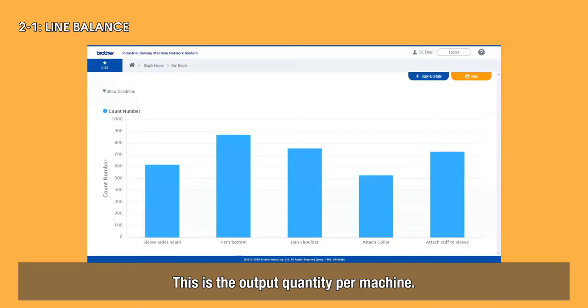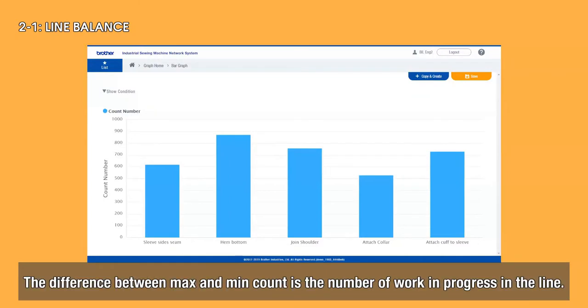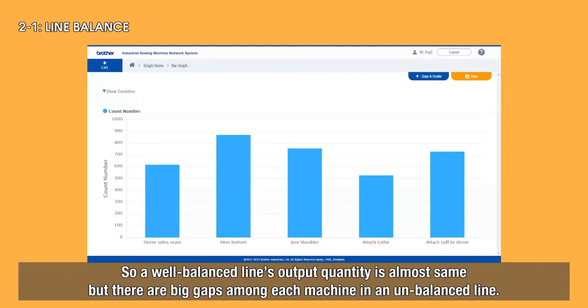This is the output quantity per machine. The difference between max and min count is the number of work in progress in the line. So a well-balanced line's output quantity is almost the same, but there are big gaps among each machine in an unbalanced line.